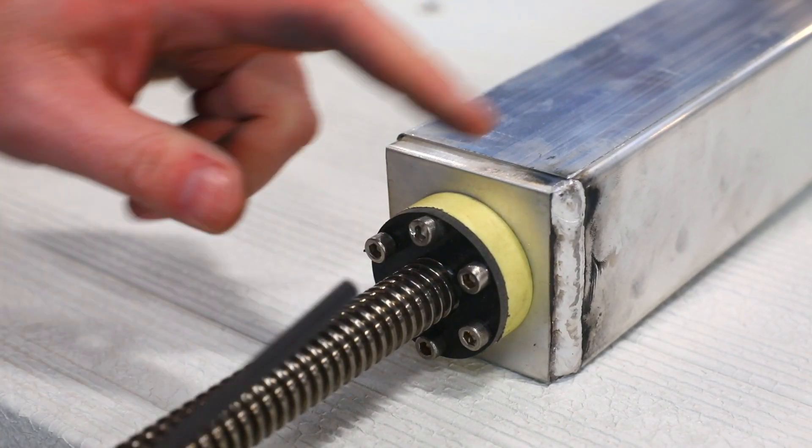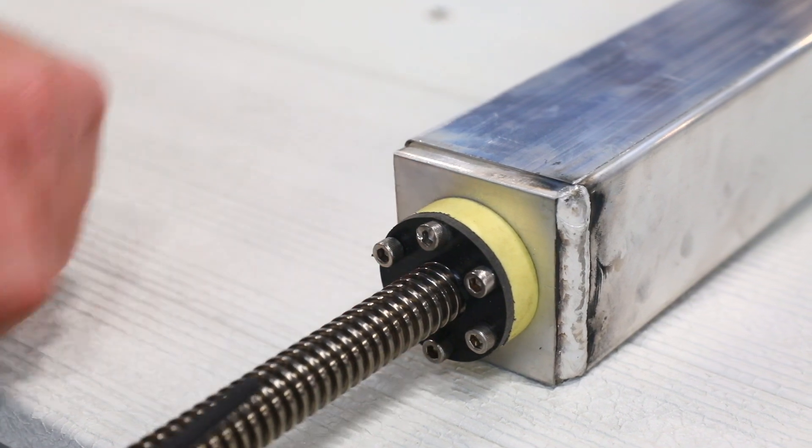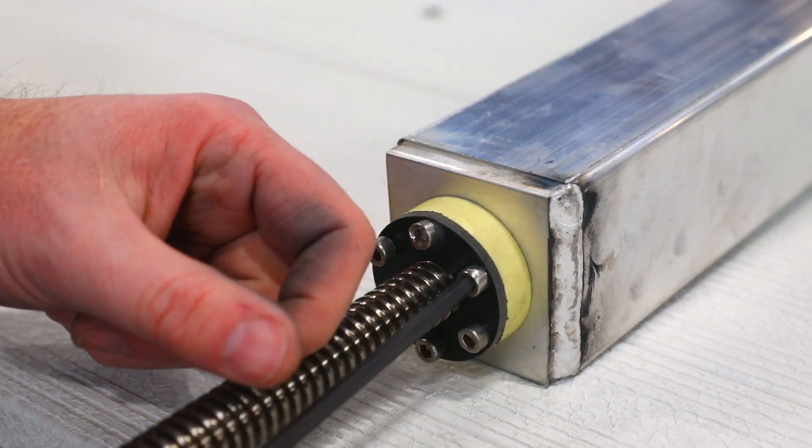With the outer housing removed we can now perform maintenance on the screw leg. Use an allen wrench to remove all six screws.